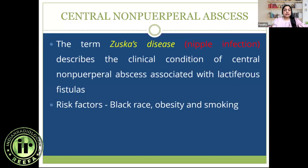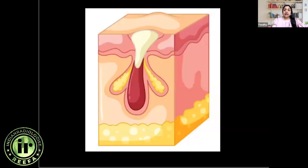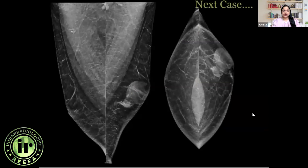Smokers, obese patients, and patients of Black race are more prone to central non-puerperal abscesses. The etiology involves squamous metaplasia of the cuboidal epithelium, leading to formation of keratin plugs, which causes stagnation, secondary infection, and subsequent abscess formation.